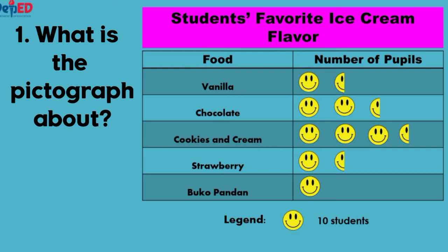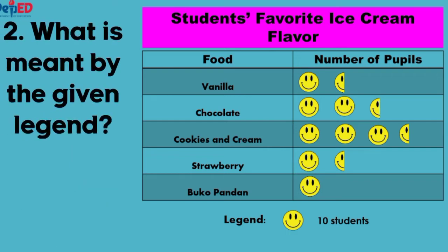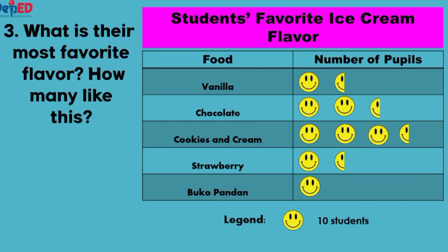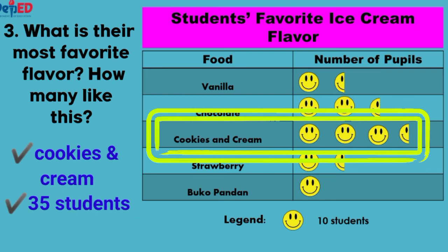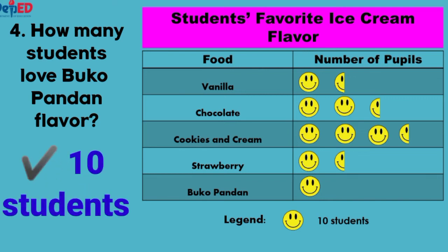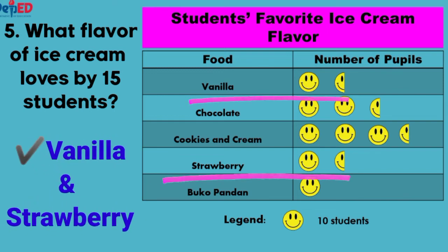Now let us interpret the pictograph using the data. Number one, what is the pictograph about? You must answer the title of the pictograph. The pictograph is about students' favorite ice cream flavor. Number two, what is meant by the given legend? The given legend denotes 10 students. Number three, what is their most favorite flavor and how many like it? Based on the pictograph, the most favorite flavor of the students is cookies and cream, with 35 students. Number four, how many students love Buko Pandan flavor? There are 10 students who love Buko Pandan as their favorite flavor. Number five, what flavor of ice cream is loved by 15 students? It's vanilla and strawberry flavor.